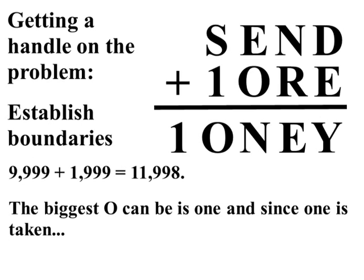So, the biggest number O can be would be 1. And since 1 is already taken, O equals 0.